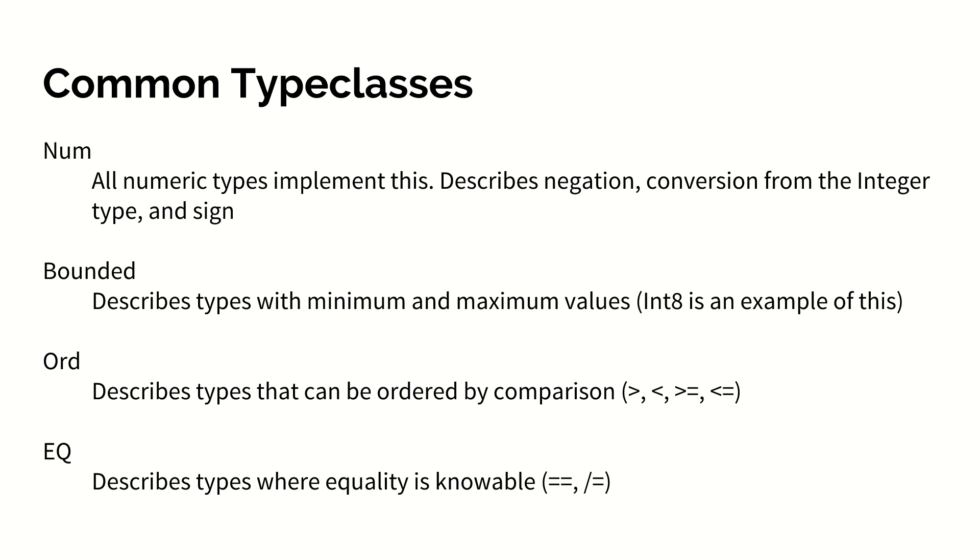Some common type classes include that of num. Num is implemented by all numeric data types. Num describes the ability to negate, convert from the integer type into another type, and also get information about the sign of what is described by num.